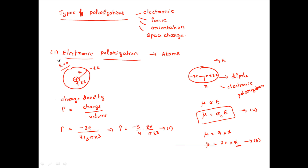We will write the charge density of an atom. The charge density ρ equals charge divided by volume. The negative charge distribution in the atom is −ZE divided by (4/3)πr³, since the atom is spherical in shape. Therefore, ρ = −3ZE / (4πr³).